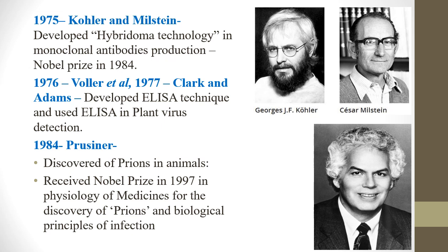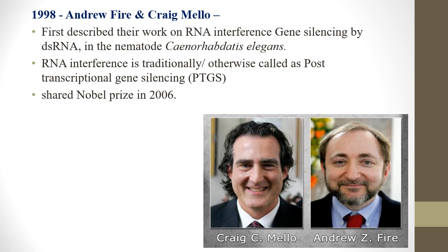Köhler and Milstein developed hybridoma technology for production of monoclonal antibodies and shared the Nobel Prize. Voller, Clark, and Adams developed the ELISA (enzyme-linked immunosorbent assay) technique for detection of plant viruses. Prusiner discovered prions — malfunctioned proteins in animal brains causing mad cow disease (bovine spongiform encephalopathy) — and received the Nobel Prize in 1997. Andrew Fire and Craig Mello discovered RNA interference (RNAi), also called PTGS (post-transcriptional gene silencing), in the nematode Caenorhabditis elegans, receiving the Nobel Prize in 2006.